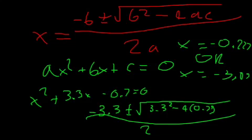We need to complete the square. So let's try an example. X squared plus 6x equals zero.